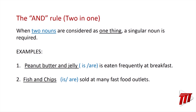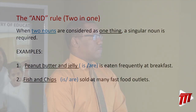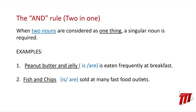The and rule also has a slight variation: when two nouns are considered as one thing, a singular verb is required. For example, peanut butter and jelly are considered as one meal, and fish and chips are considered as one meal. So we say: peanut butter and jelly is eaten frequently at breakfast, and fish and chips is sold at many fast food outlets.